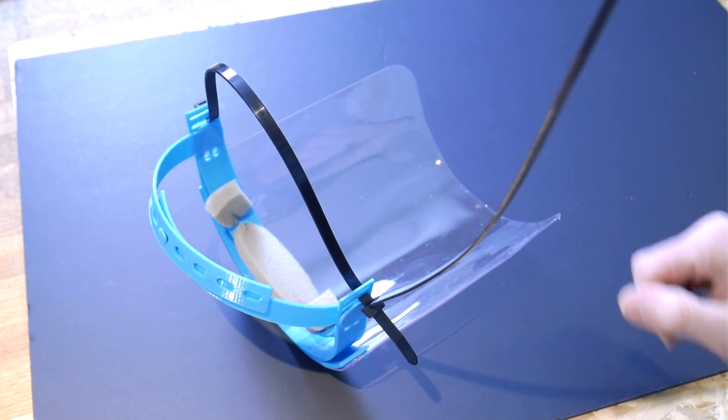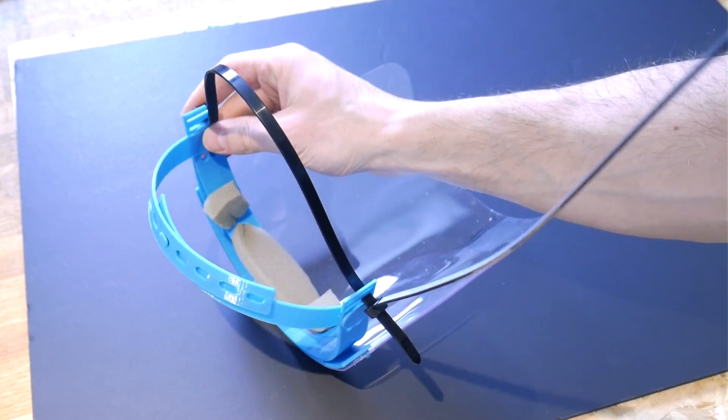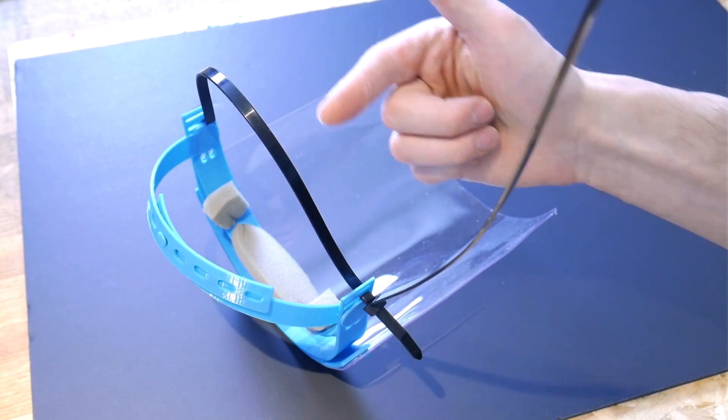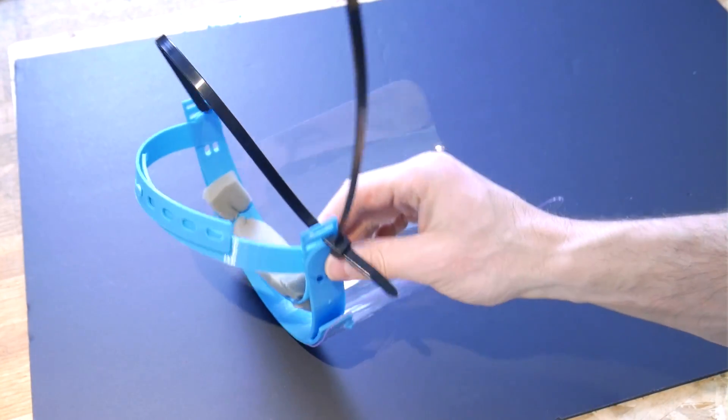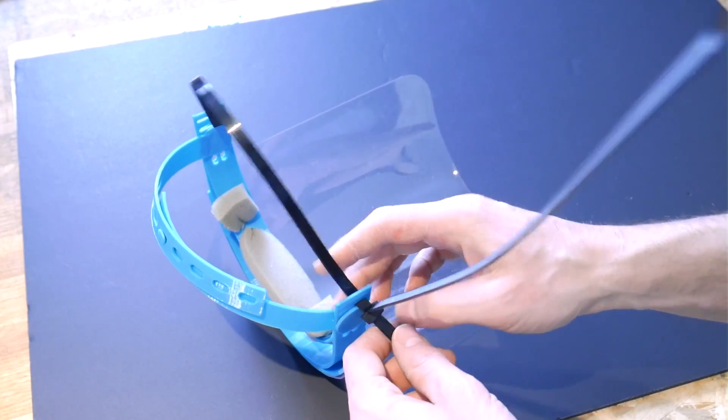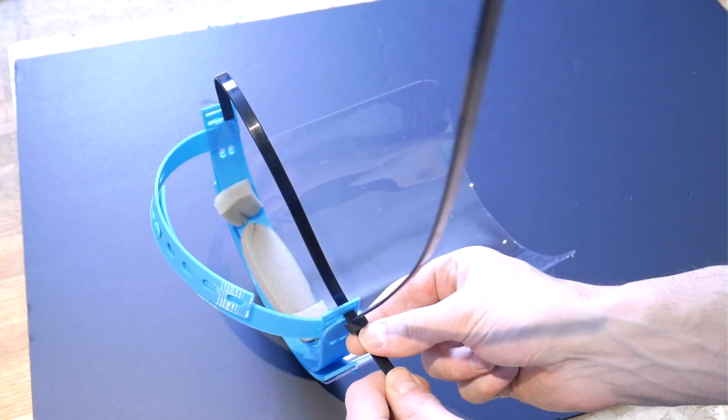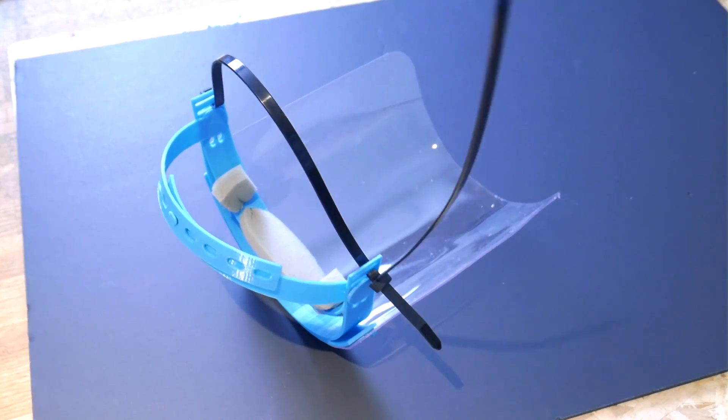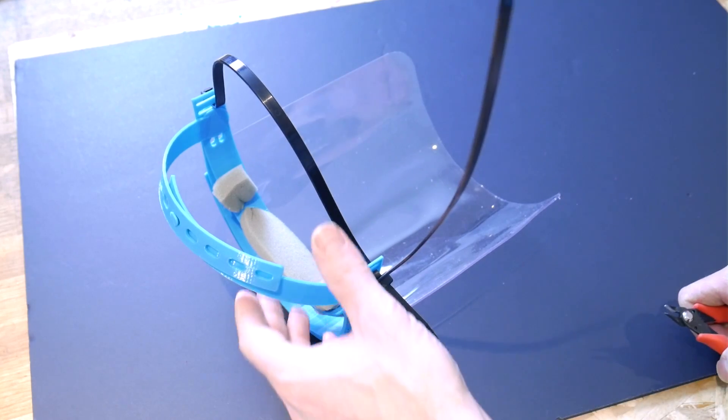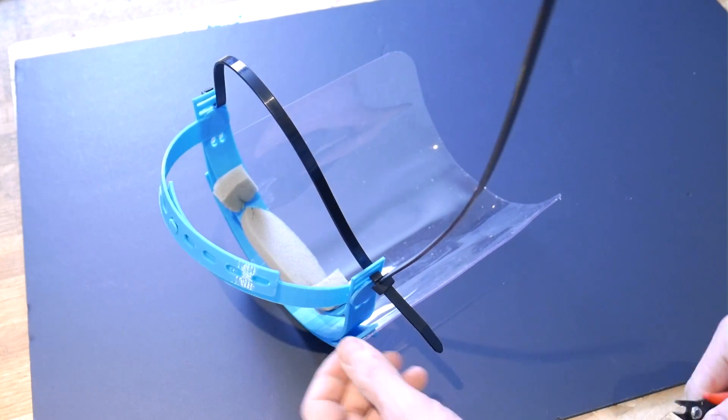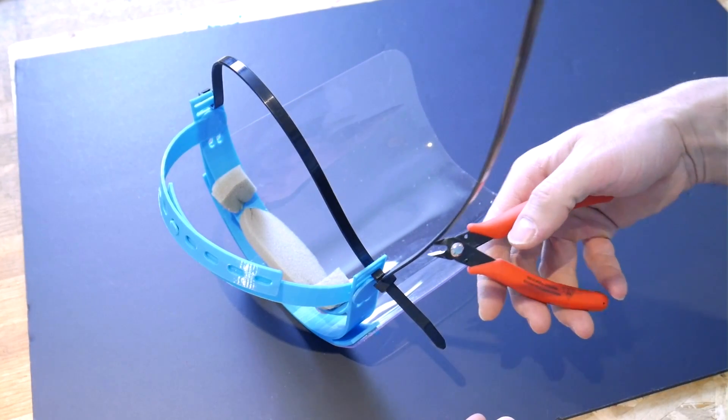If you get really desperate, you can also resort to using zip ties through those little slotted features. Here you can see that I've looped it through those slots at the back, and you're just going to need a second zip tie to lock it into place. Then you can adjust the tension on your head, and then you can come in with some side cutters and obviously cut off the excess zip tie.